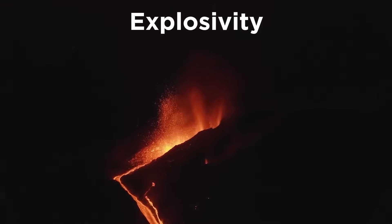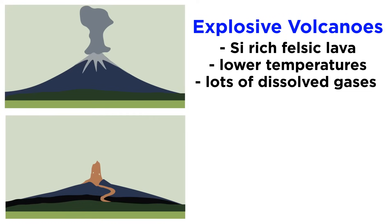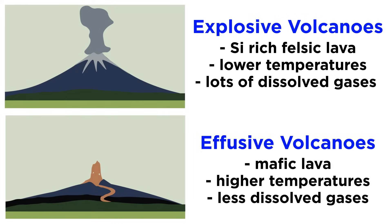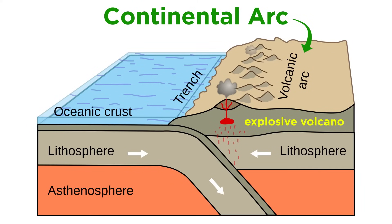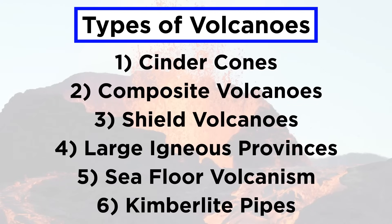Another important property of a volcano is its explosivity. Explosive volcanoes erupt silica-rich felsic lava and have high amounts of dissolved gases, especially water, and effusive volcanoes erupt mafic lava at higher temperatures and have lesser amounts of dissolved gases. Explosive volcanoes tend to form along continental arcs, while effusive volcanoes are most common among mid-ocean ridges and seamounts, where they sit on oceanic crust.